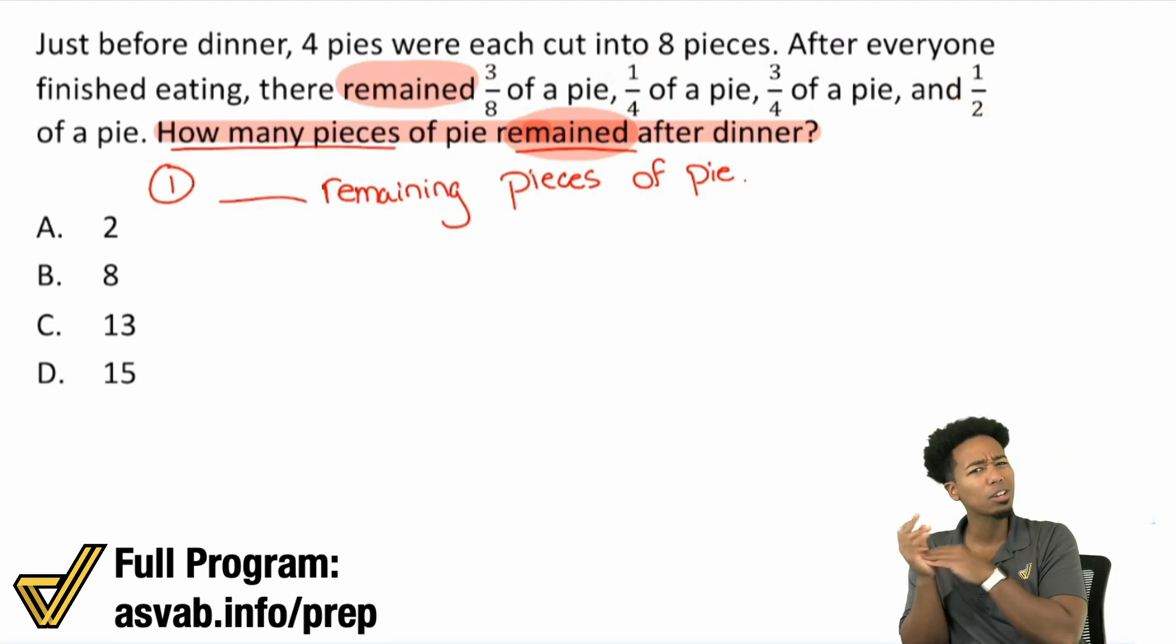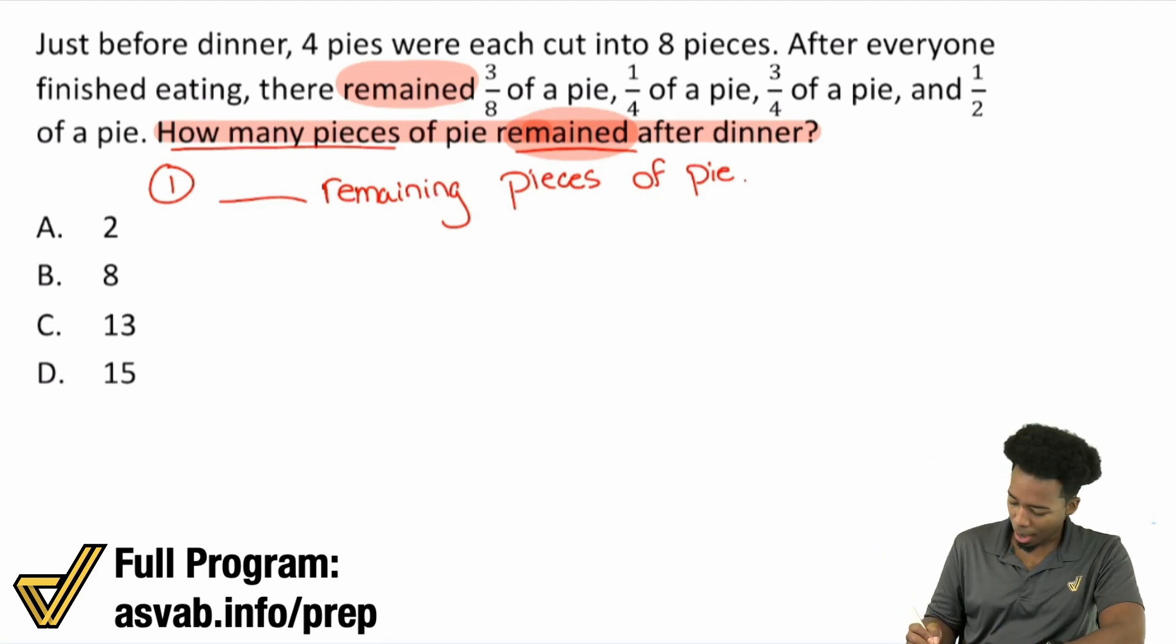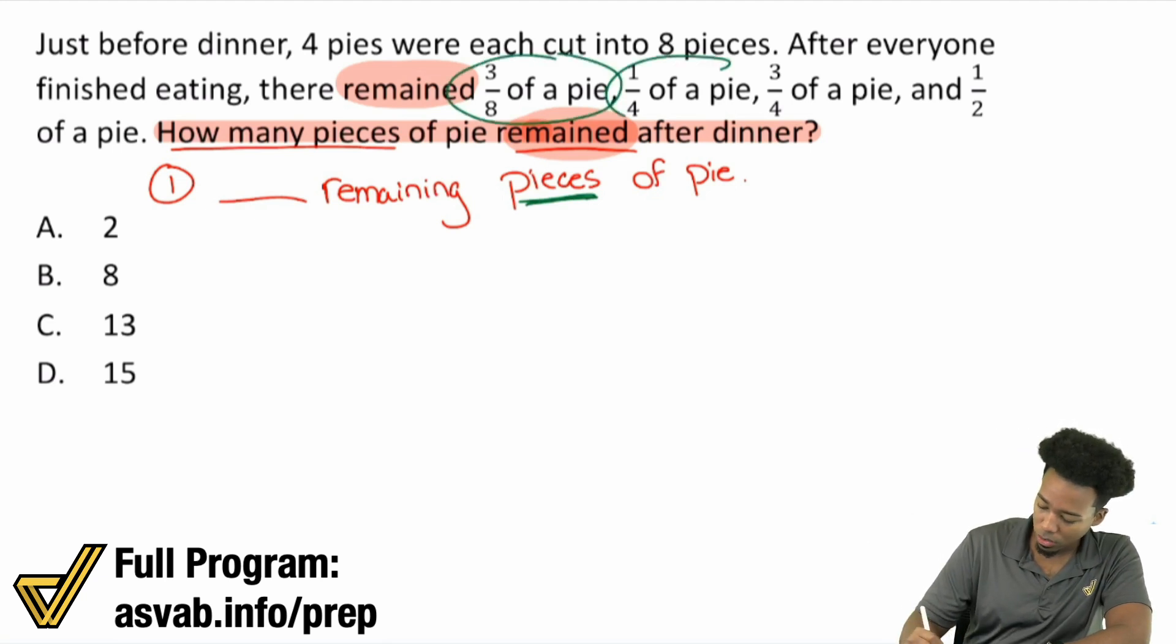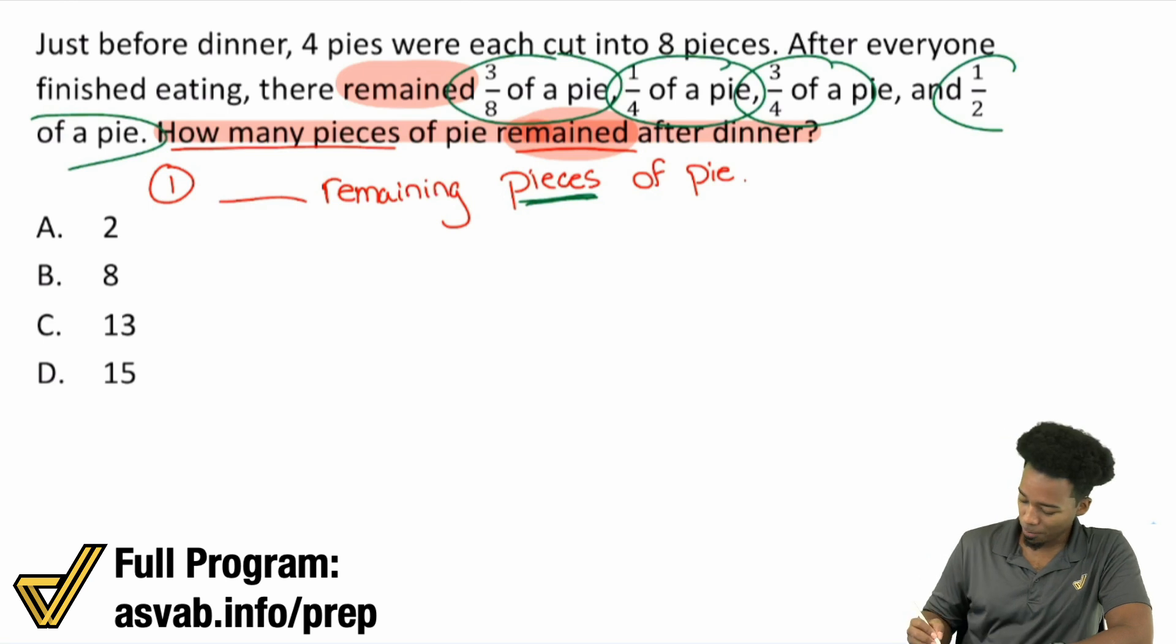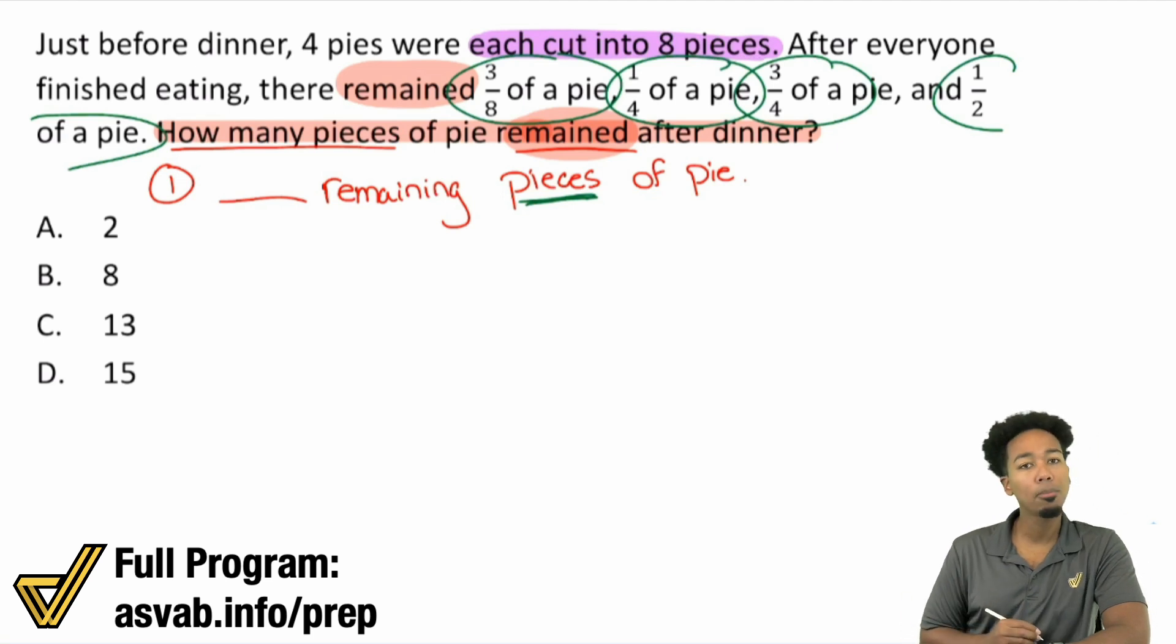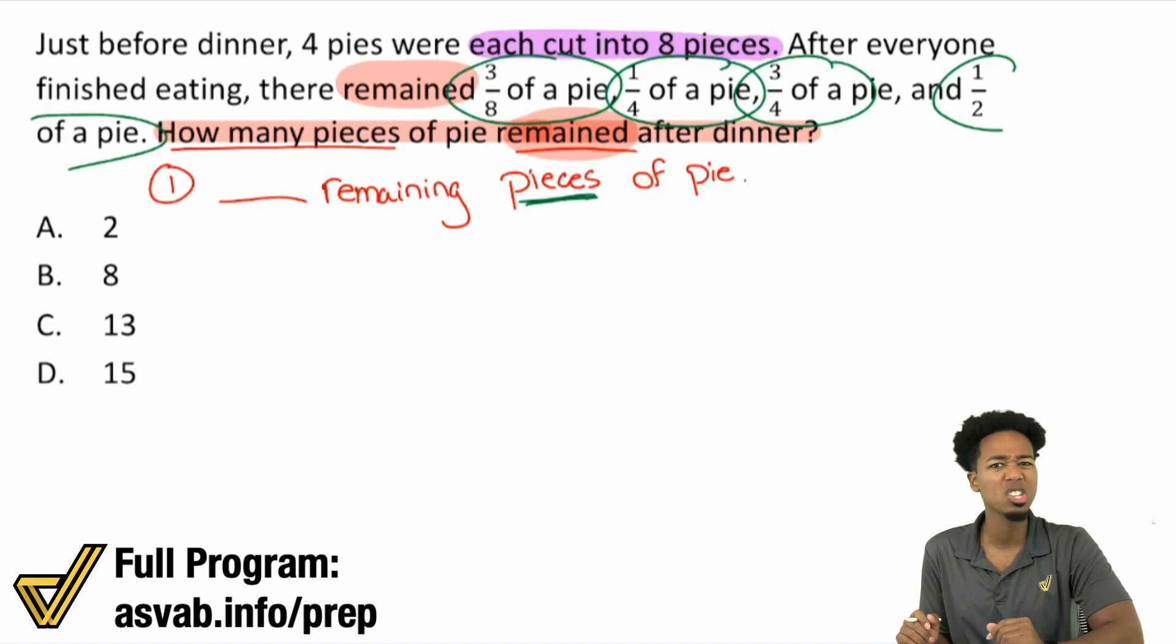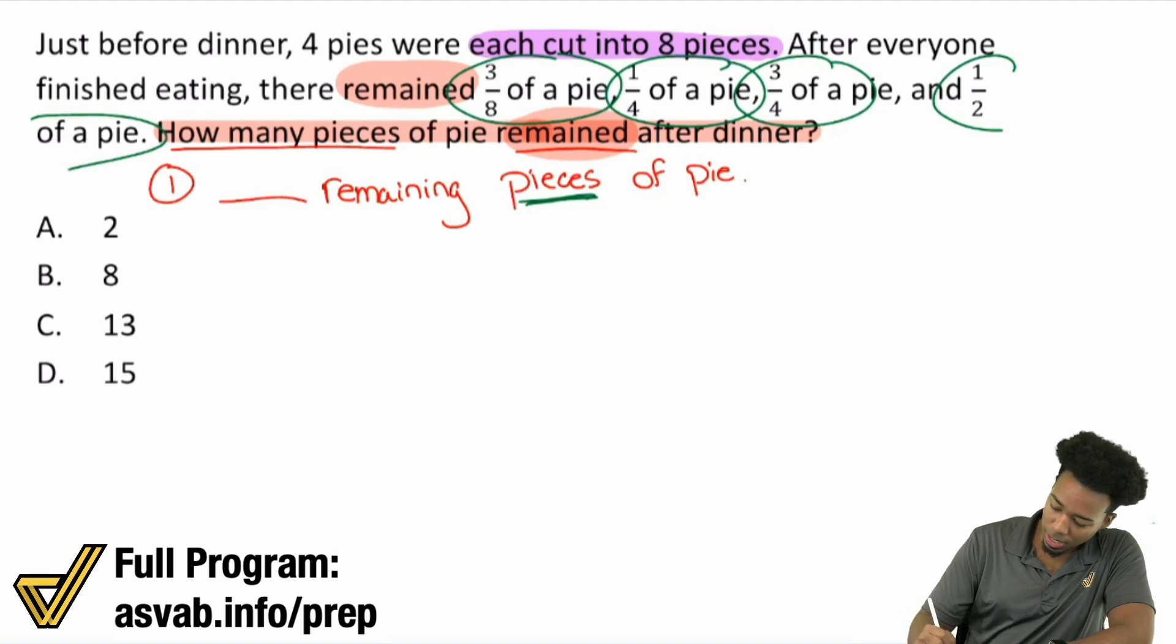Now what do we do with that information? Because those are all fractions, not actual pieces, right? We're looking for how many pieces were left. Here we're given fractions. So what do we do with that? Well, what we're going to do with that, my math party people, is this. Notice that in the beginning, we were told that each pie was cut into eight pieces. Each pie was cut into eight pieces.